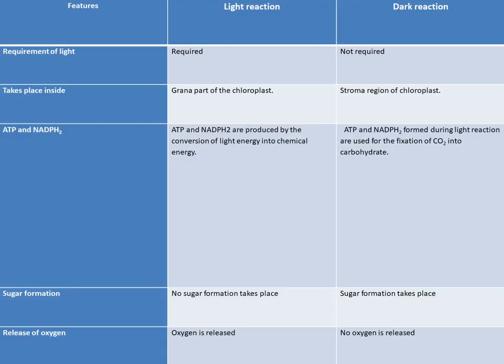Let us now see the differences between light and dark reaction. In light reaction, light is required, but in dark reaction it is not required. Second, light reaction takes place in the part of chloroplast that is grana. Grana is the matrix present inside the thylakoids. But dark reaction takes place in the stroma region of chloroplast. Stroma is the matrix present in the chloroplast.